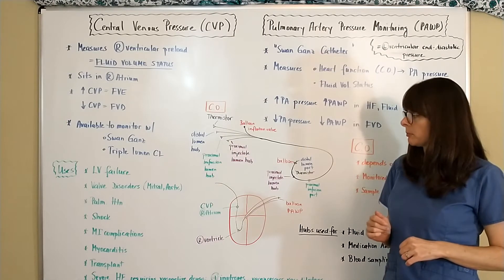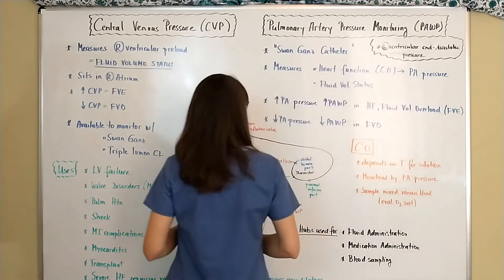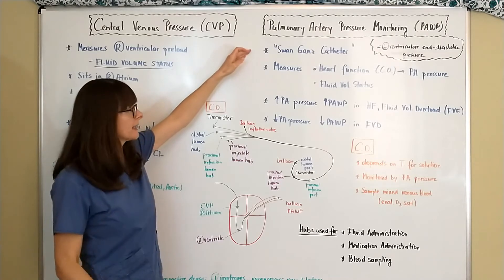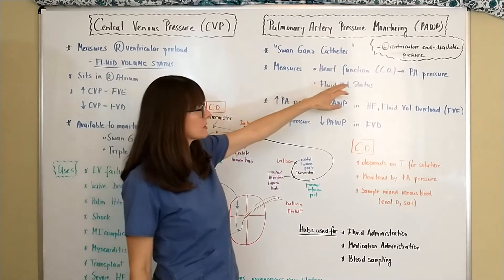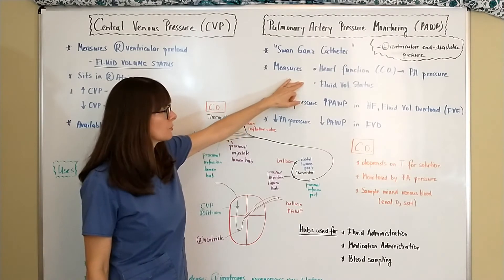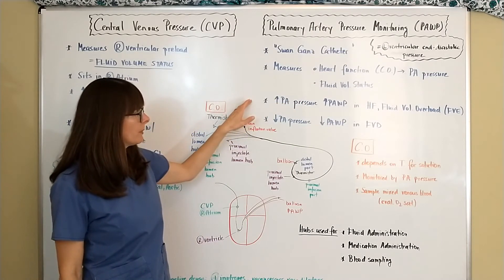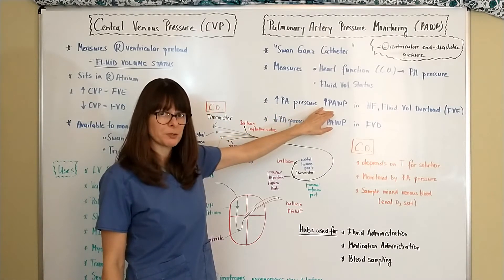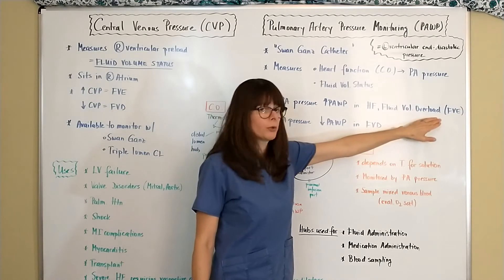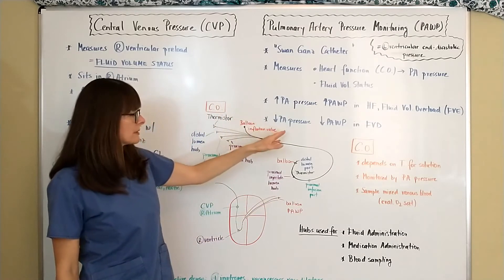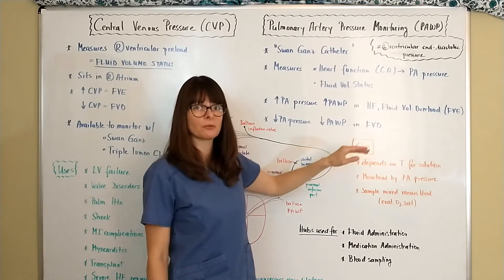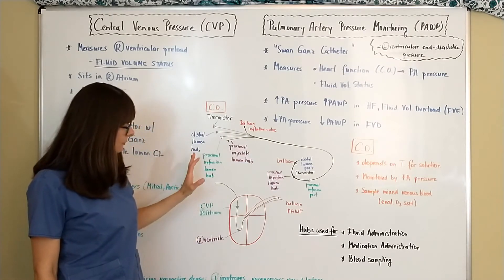For pulmonary artery pressure monitoring, the Swan-Ganz catheter is the actual line inserted. It measures the patient's heart function — cardiac output — through the PA pressure and also helps determine the patient's fluid status. When the pulmonary artery pressure and pulmonary artery wedge pressure are increased, that usually means the patient is in heart failure or has fluid volume overload or excess. When there are low readings in the pulmonary artery pressure and pulmonary artery wedge pressure, that usually means the patient is in fluid volume deficit.